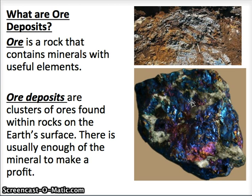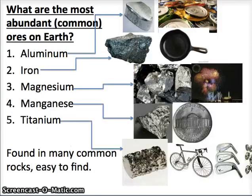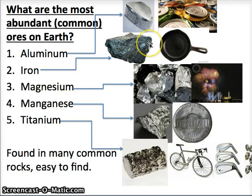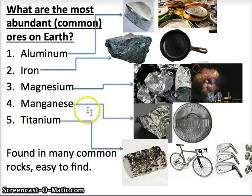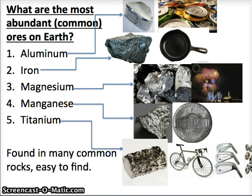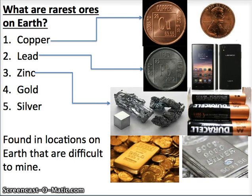When we find metals that are concentrated, people will start to mine or dig them out. Let's look at the most common ores on earth — these are easy to find. First, aluminum, used in aluminum cans; iron, used in many machines like an iron skillet; magnesium, found in fireworks and dietary supplements; manganese, which is in our nickels; and titanium, a very hard metal used to reinforce many products.